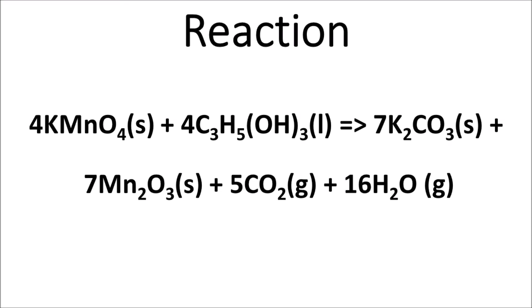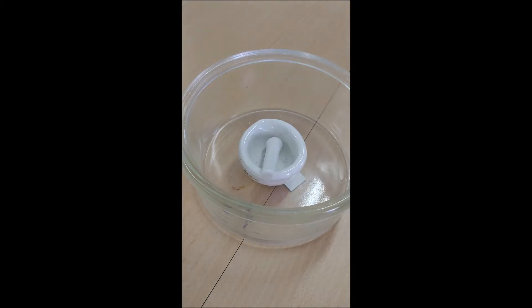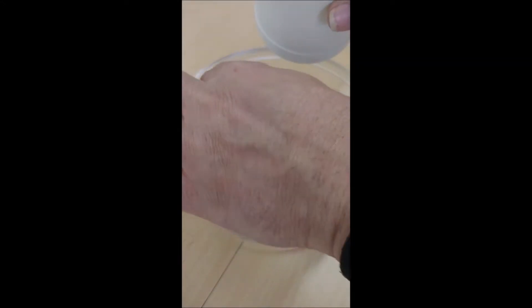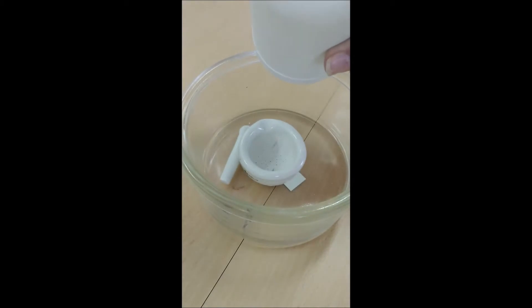Potassium permanganate is a dark violet-colored powder. Its reaction with glycerol, commonly known as glycerin or glycerine, is highly exothermic, resulting rapidly in a flame, along with the formation of carbon dioxide and water vapor.